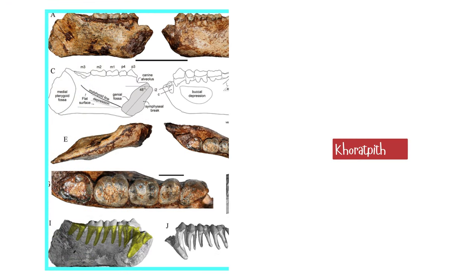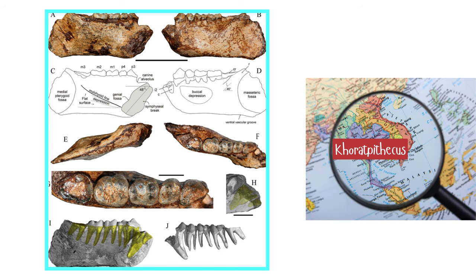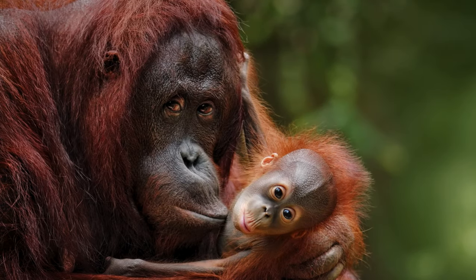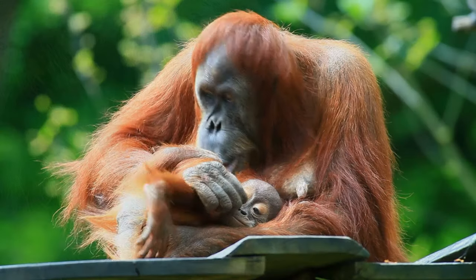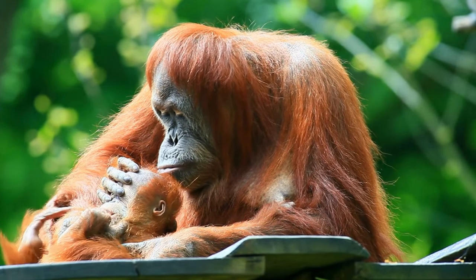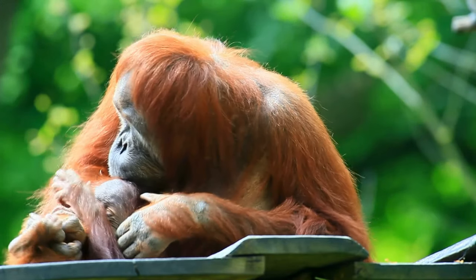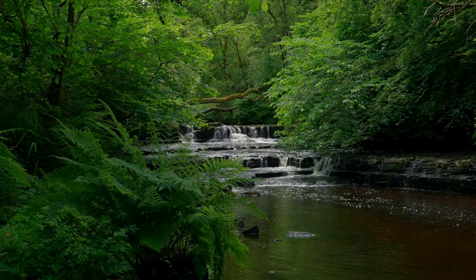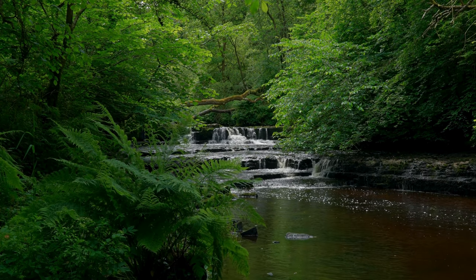Khoratpithecus, an ancient ape from Southeast Asia, lived during the Miocene in Thailand and Myanmar. It shared many traits with orangutans, suggesting a close evolutionary relationship. The evolutionary path from Khoratpithecus to modern orangutans is obscured by a 5 million year gap in the fossil record, likely corresponding to climatic changes that created isolated forest refuges.